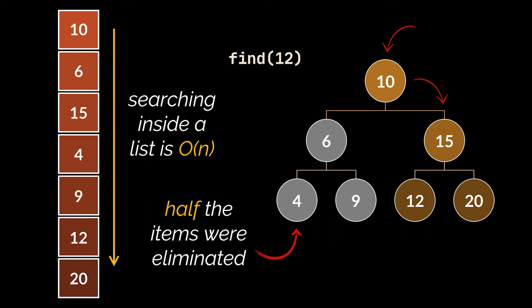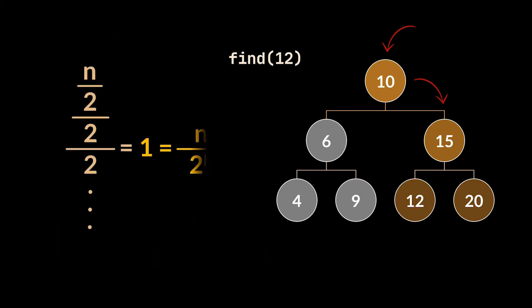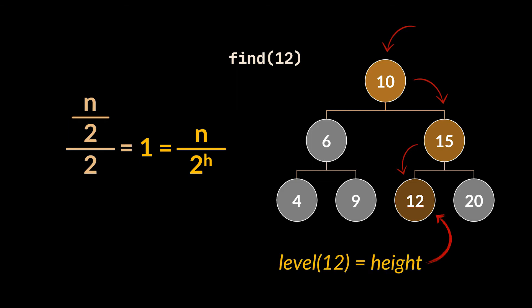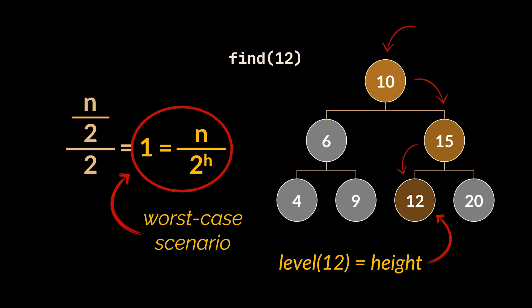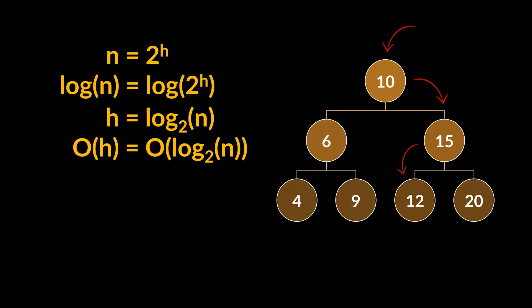And if we keep dividing these elements by two until we reach the one item we are looking for, N — which is the number of elements or nodes we have — will be divided by two until we reach the item we want. Or in the worst case, if this item was at the bottom of the tree, these divisions can be represented by two to the power of the height of the tree. If we want to find the node with value 12, we start at the root node which is 10, then go right, then left. That is two divisions by two, and the level of 12 is two, which also happens to be the height of our tree. Therefore, the number of divisions needed in a worst case scenario is equal to the height of the tree. By wrapping both sides with log base 2, we can easily see that O(H) is equal to O(log₂ N), which is way faster than searching inside a list.